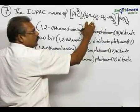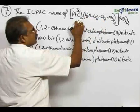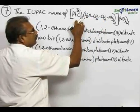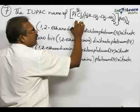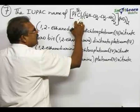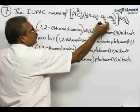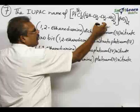And first, the dichloro should come, because that is the alphabetical order preference. Because after C only, then the E will come.